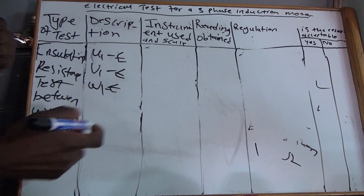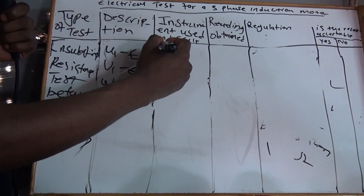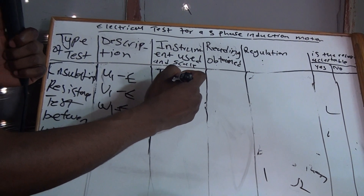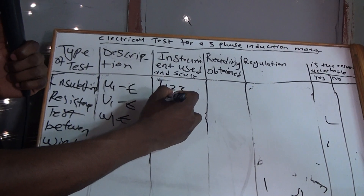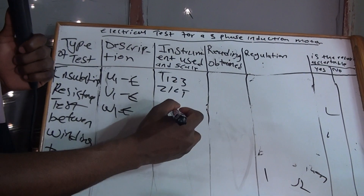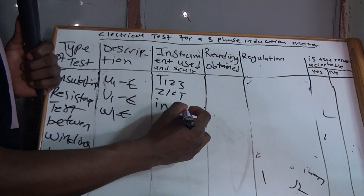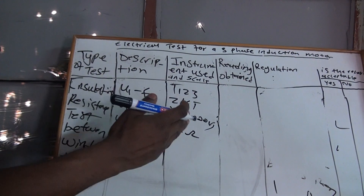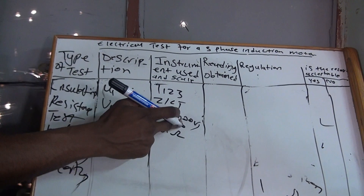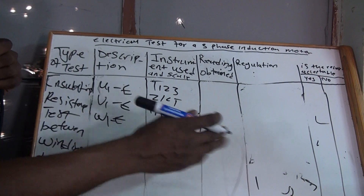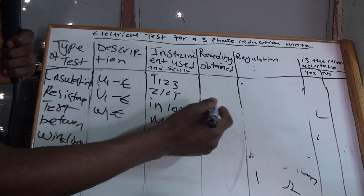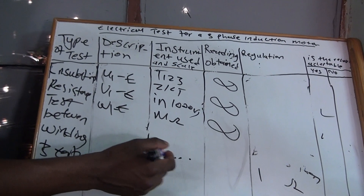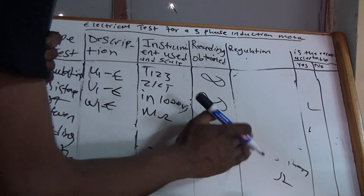On the instrument used and scale, write the mega tester — for example T123 ZIC T — and specify in thousand volts per mega ohm. Always remember to write 'thousand volts' or you will lose marks. The readings obtained should also be infinity, represented by dots on the display.